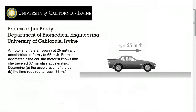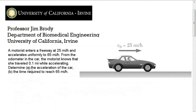Let's solve this problem. A motorist enters a freeway at 25 miles per hour and accelerates uniformly to 65 miles per hour. From the odometer in the car, the motorist knows that she traveled one-tenth of a mile while accelerating. Determine A, the acceleration of the car, and B, the time required to reach 65 miles per hour.